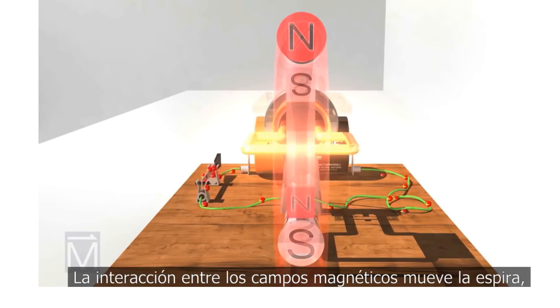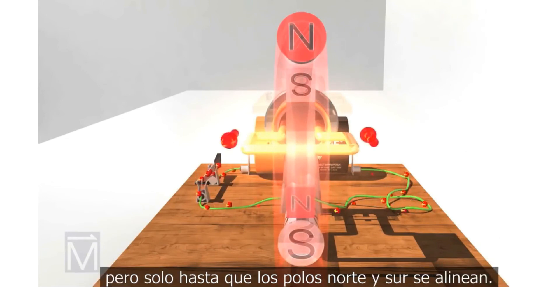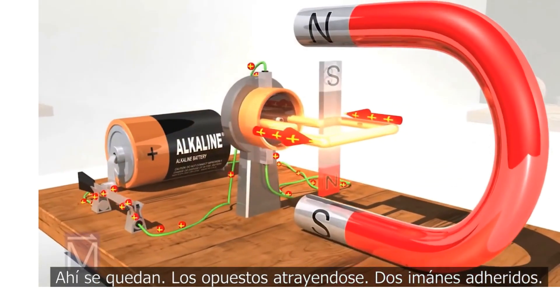The interacting magnetic field caused the armature to move, but only to the point when their fields align north to south. And there they stayed, opposite attracting opposite, two magnets stuck together.